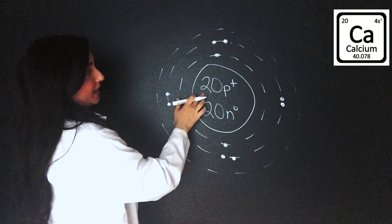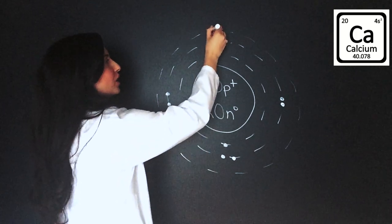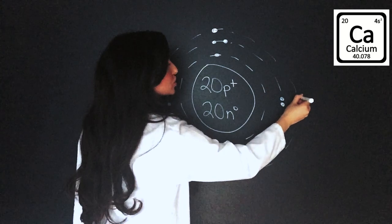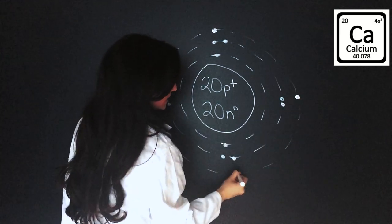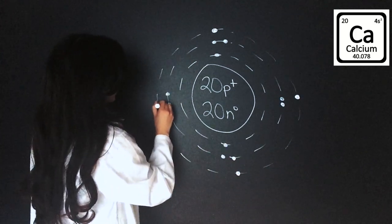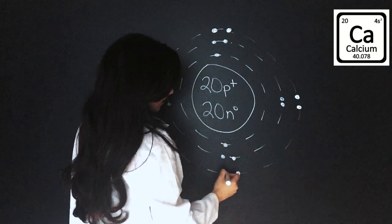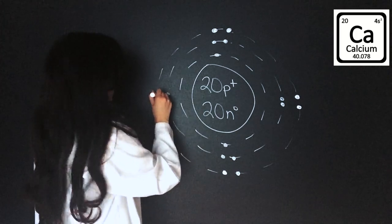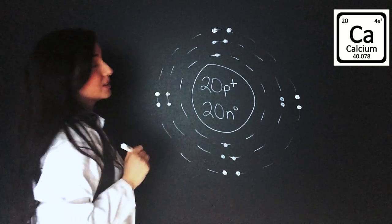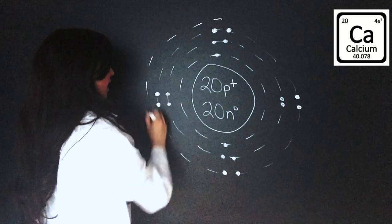We need to get up to 20 and we're only at 10 so far. Eleven, twelve, thirteen, fourteen, fifteen, sixteen, seventeen, eighteen. Still not at 20. One more shell.